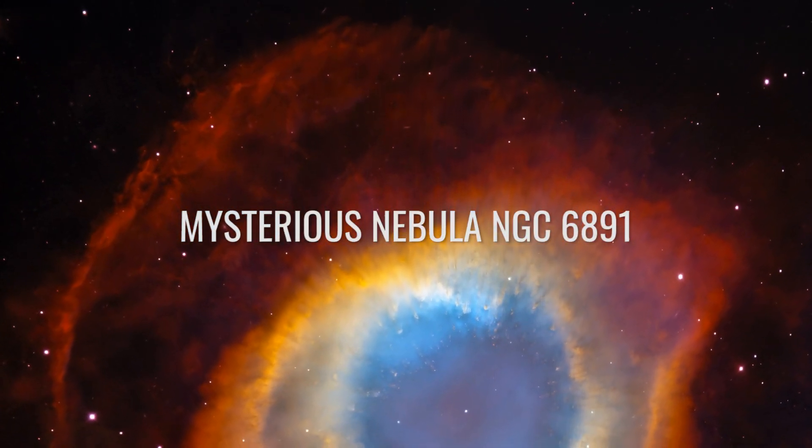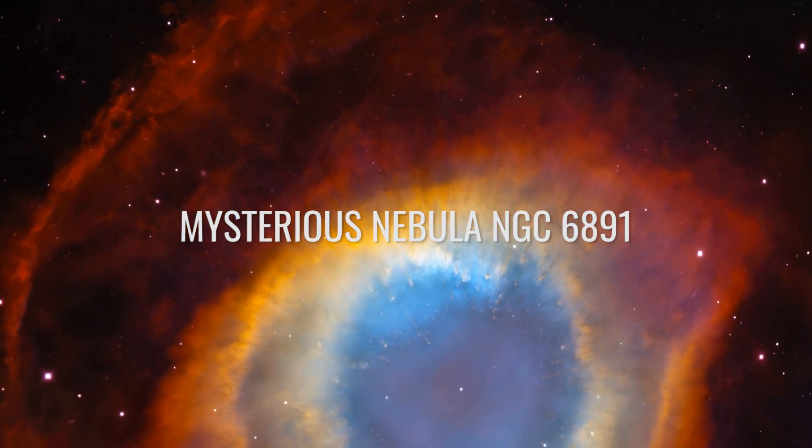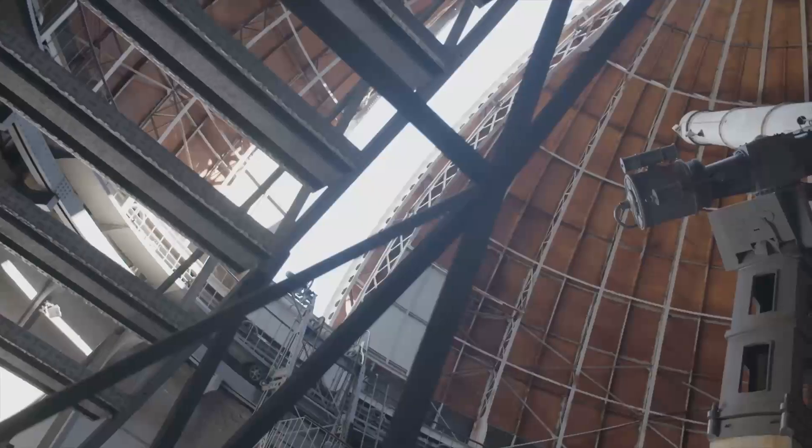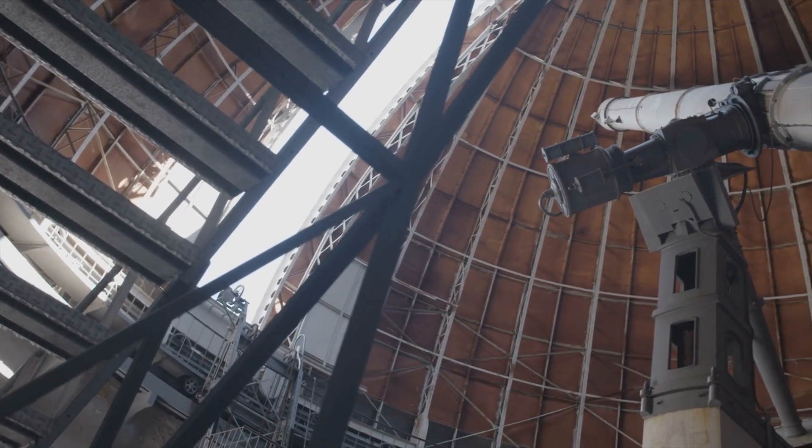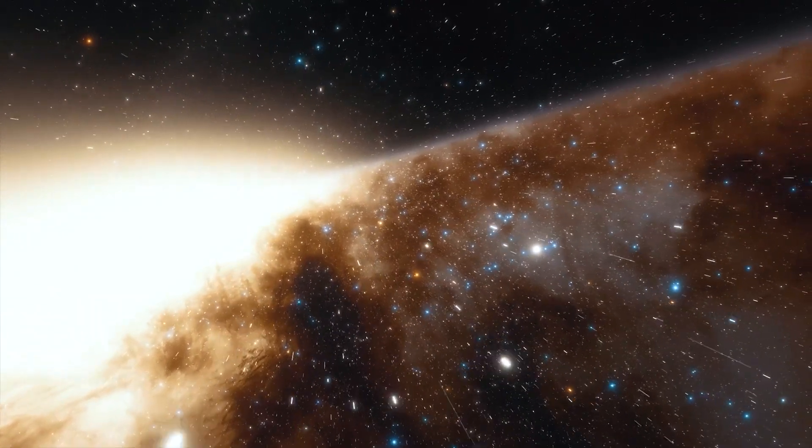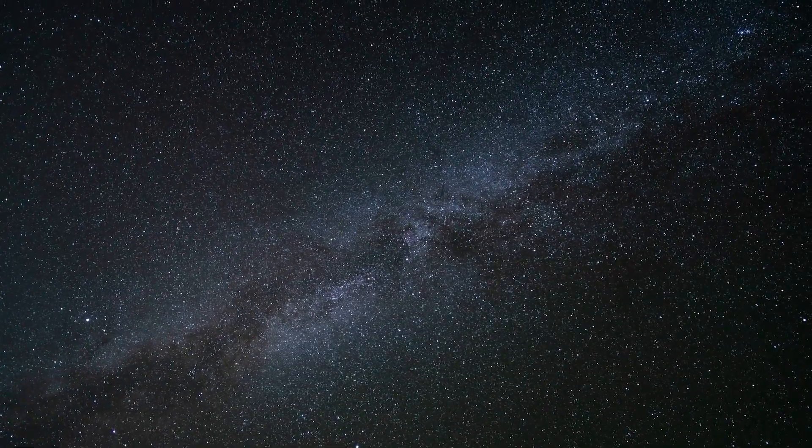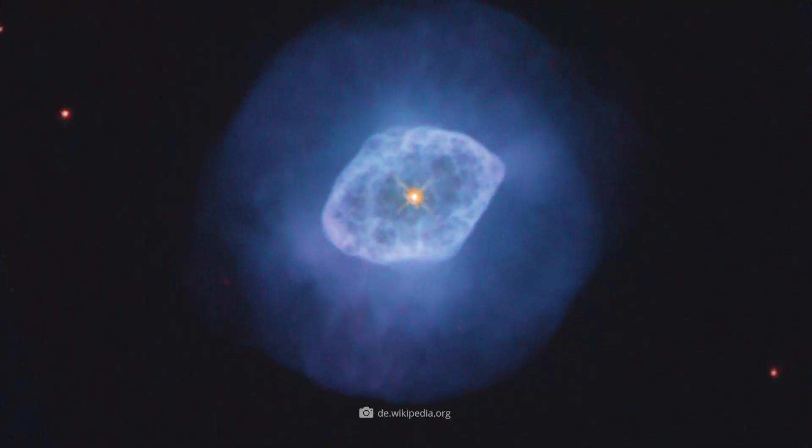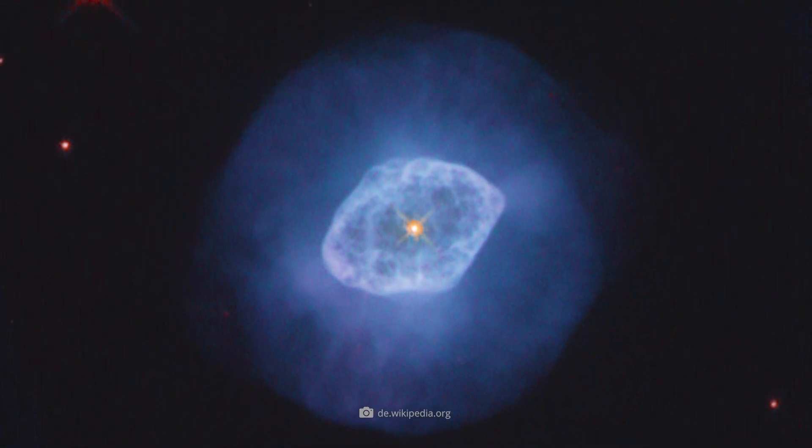Mysterious Nebula NGC 6891. It's September 22nd, 1884, and Scottish astronomer Ralph Copeland adds a remarkable entry to the ranks of astronomical discoveries. At that time, however, the researcher could not have guessed the scope of this fascinating planetary nebula, which was given the scientific designation NGC 6891.